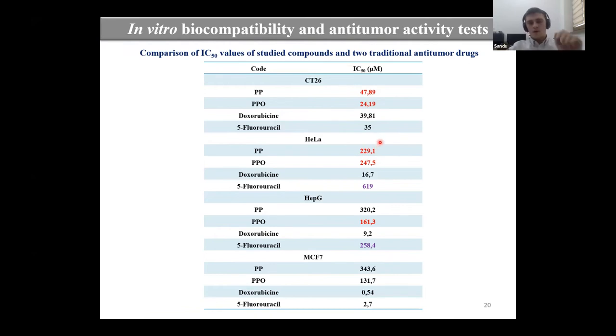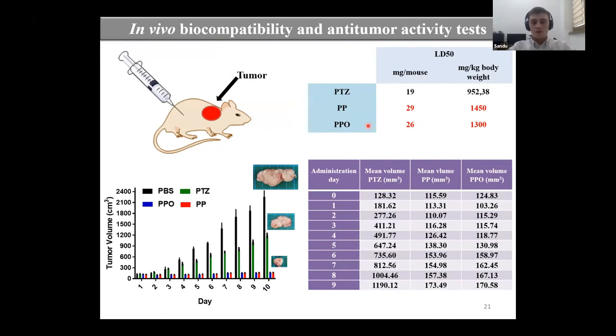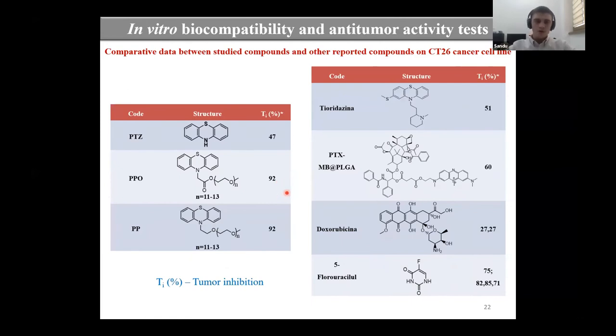That's why we moved forward and tested these compounds in vivo on mice. First we determined the median lethal dose of these two compounds and phenothiazine as a positive control. After that we administered these compounds to mice in a dose lower than LD50 during 10 days by intraperitoneal administration. After 10 days we observed that the tumors are approximately totally inhibited by these two compounds comparing to a negative control PBS. The tumor inhibition was 92 percent and comparing this result with other results done on the same cell line, we observed that our results are much better.